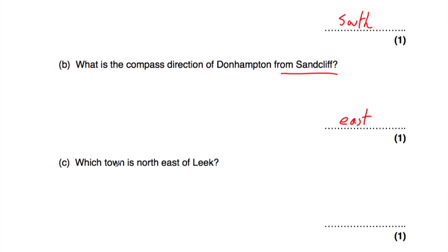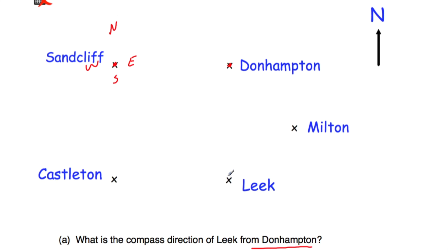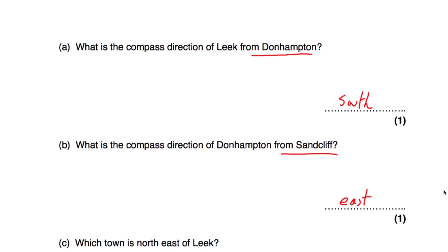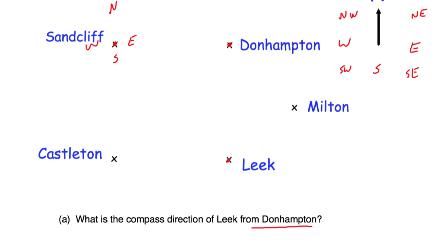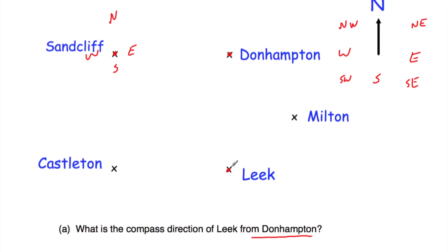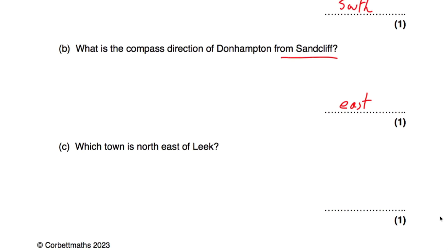Part C says which town is north east of Leake? Let's go to Leake — so here's Leake. We want to go north east. We've got north, east, south, west, and in the middle we'd have north east; down here south east; down this way south west; and in this direction north west. Going north east from Leake, that's going to be Milton. So Milton is north east of Leake.